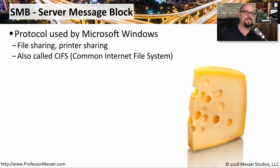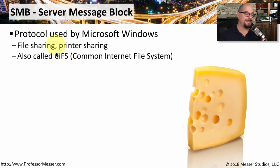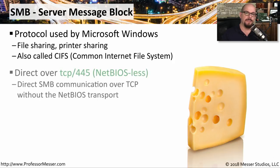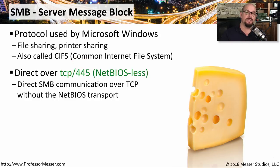Microsoft uses SMB to transfer files between Windows devices. This is Server Message Block, and you may also hear it referred to as CIFS, or Common Internet File System. It's what Windows uses to transfer files or share printers between Windows systems. SMB commonly uses TCP port 445 to send SMB communication directly between devices using the IP protocol.